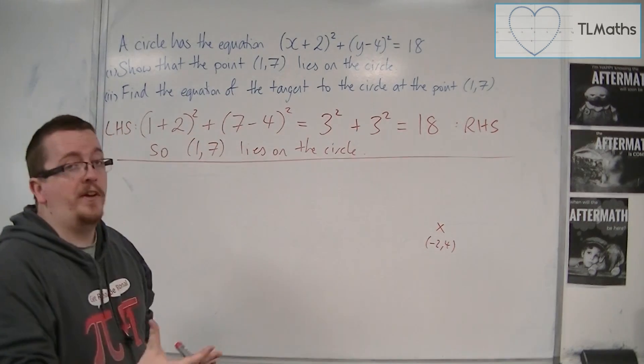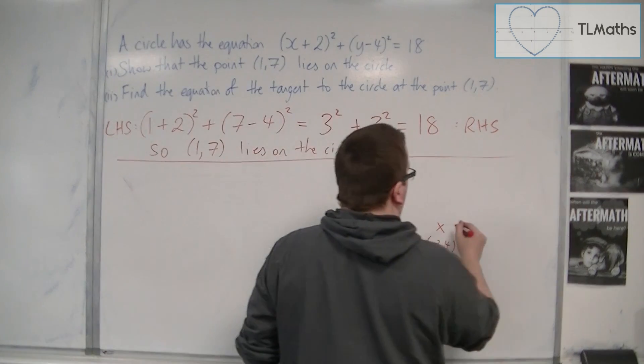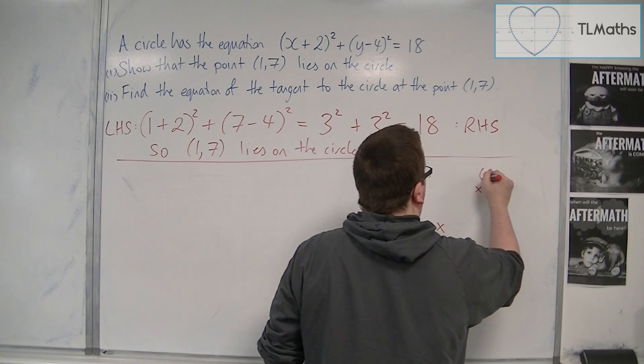And the point on the circle, on the circumference, is (1, 7), so it would be a little bit to the right and further up. So there's (1, 7).